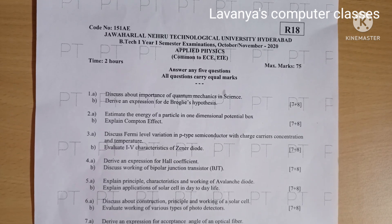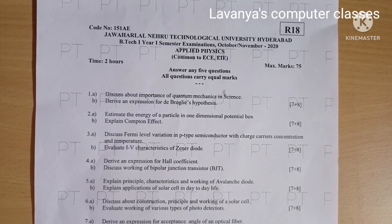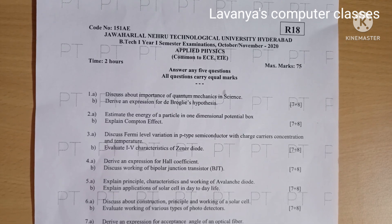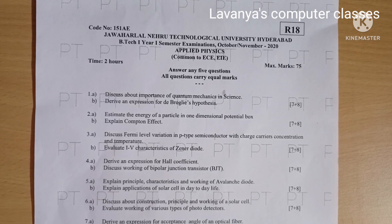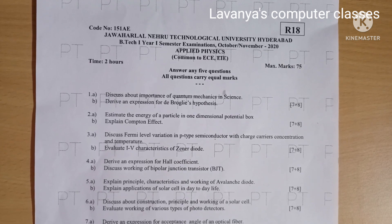Question 5a: Explain the principle, characteristics, and working of an avalanche diode, for 7 marks. Question 5b: Explain applications of a solar cell in day-to-day life, for 8 marks.